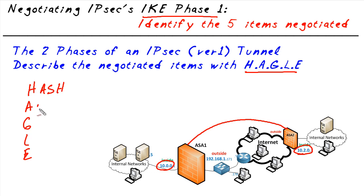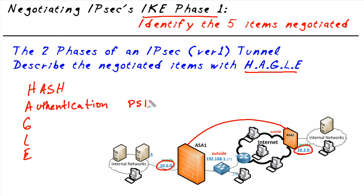The A is for authentication, which represents how we want to make the other device prove who it is. We can do authentication with something like digital certificates, or with something called pre-shared keys. Either way is fine as long as both peers agree to the method they're going to use to authenticate each other.